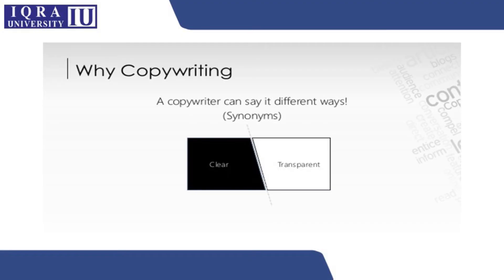A copywriter can say the same thing in various ways that normal writing probably does not. So a copywriter says the same thing in many different ways — for example, you could say it's 'clear' but you could also say it's 'transparent.'